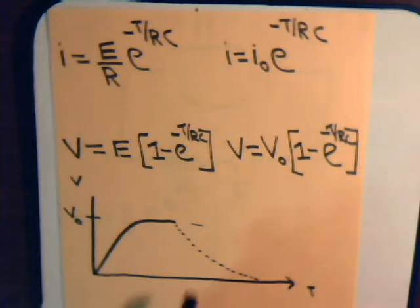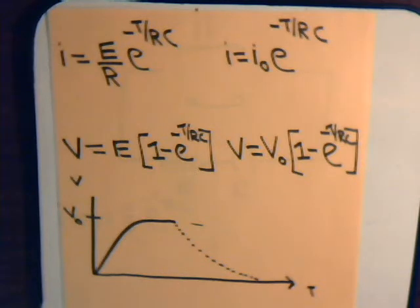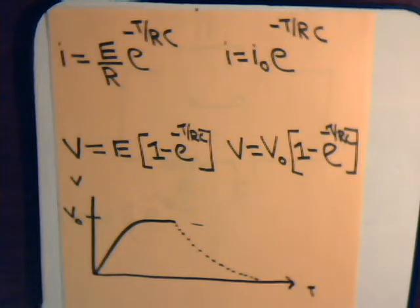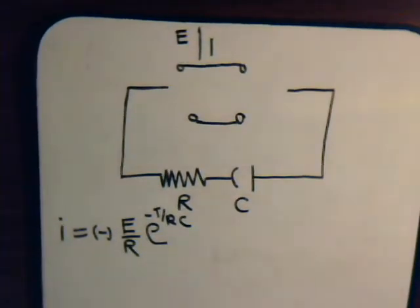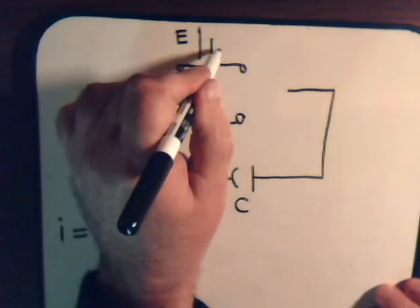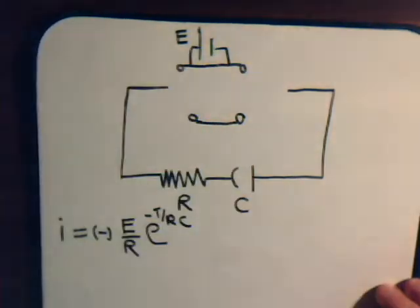The charging voltage equation gives a simple exponential graph, and when the capacitor discharges it also discharges exponentially - but we haven't yet derived the formula for that. We're going to use it in the next video, so in this video we'll take a few moments and derive an expression for the voltage of a discharging capacitor.